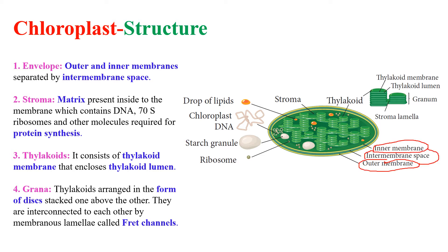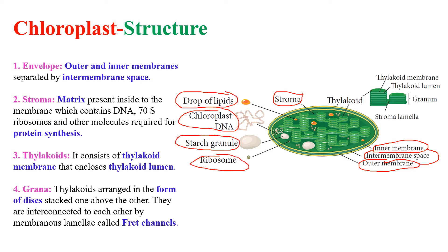The chloroplast envelope consists of outer and inner membranes that are separated by an inter-membrane space. Stroma is the matrix present inside the membrane. Stroma consists of lipids, DNA, starch, and ribosomes that are required for protein synthesis.